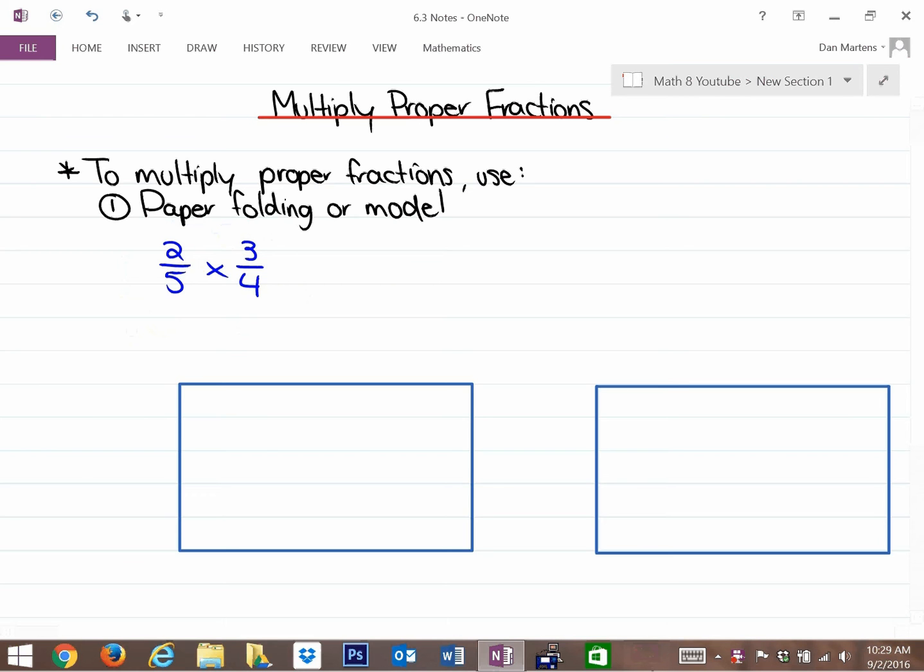So for paper folding, or for either scenario, the important thing is to remember that multiplication is often replaced with the word of, or vice versa. Of can replace multiplication. So what we're actually looking for here is what is two-fifths of three-quarters.